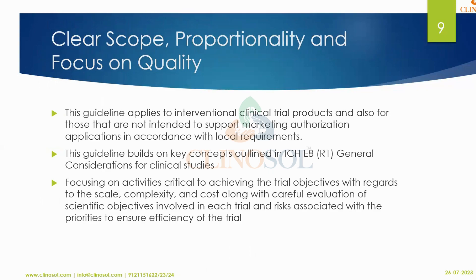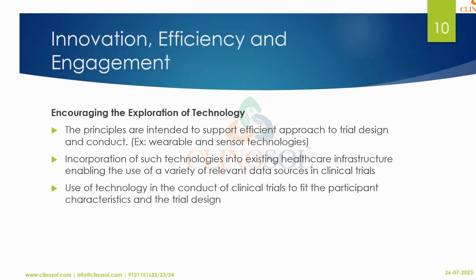The clear scope of E6 R3 covers interventional clinical trials and products not intended to support market authorization applications. This guideline builds on key concepts outlined in ICH E8 R1 (General Considerations for Clinical Studies), and focuses on activities critical to meeting trial objectives — whether addressing complexity, cost, or quality. It also emphasizes risk-based monitoring and quality management systems.